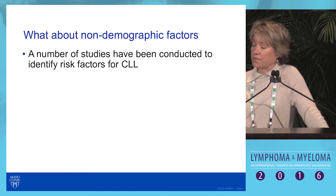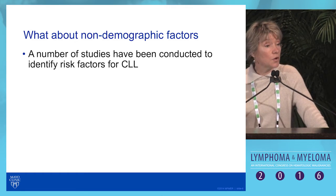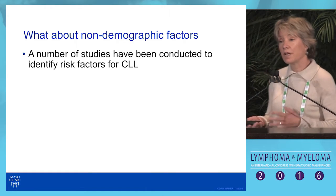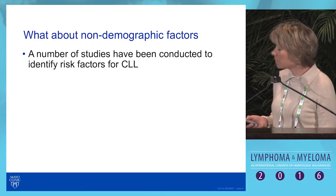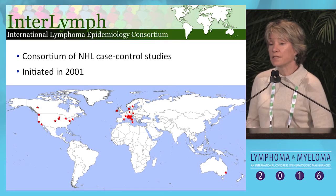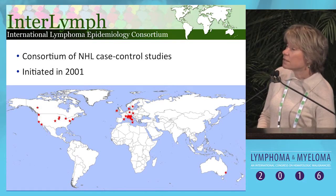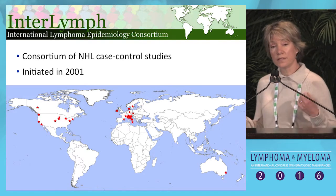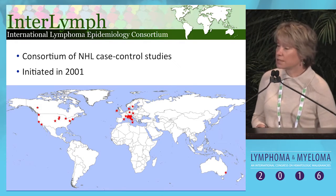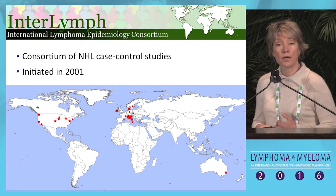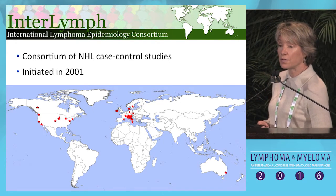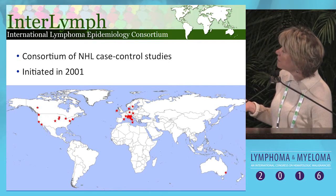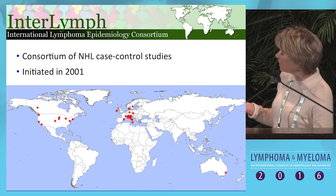What are the non-demographic factors associated with CLL? Obviously age, sex, and race are things you can't modify. A number of studies have been done to look at potentially modifiable factors, conducted in the Interlymph Consortium — a consortium of non-Hodgkin's lymphoma case-control studies initiated in 2001 — with the goal of pooling studies across centers to increase sample size and precision to evaluate associations of risk factors with CLL and non-Hodgkin's lymphoma overall.